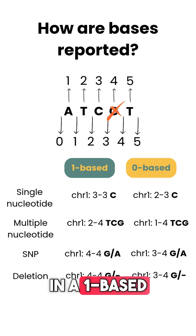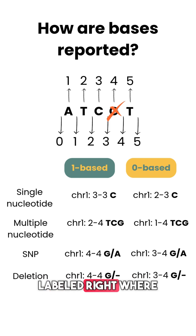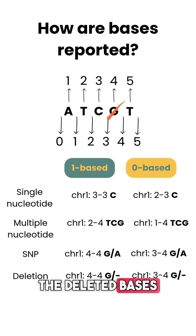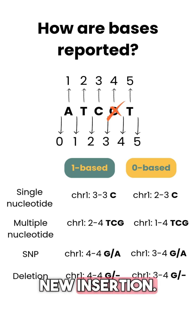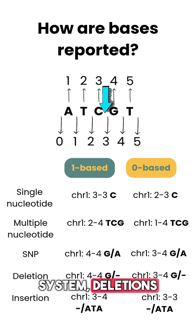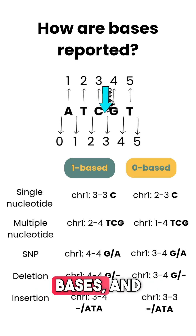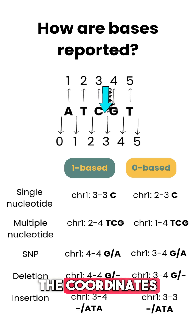In a one-based coordinate system, deletions are labeled right where the deleted bases are, and insertions are shown between the bases that flank the new insertion. But in a zero-based system, deletions are marked by the coordinates that surround the deleted bases, and insertions are placed exactly at the coordinates where the new bases appear.